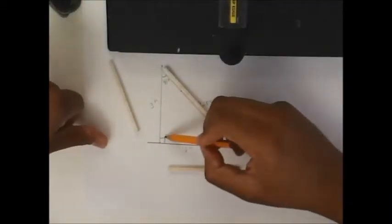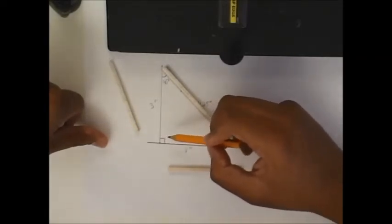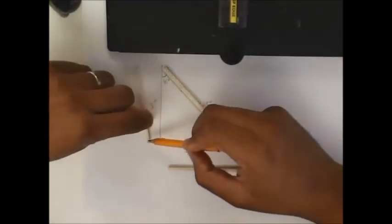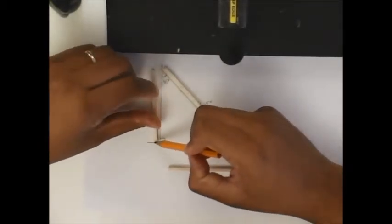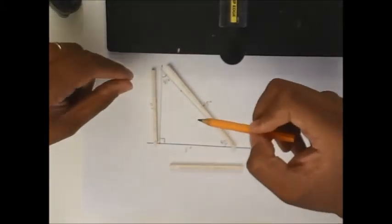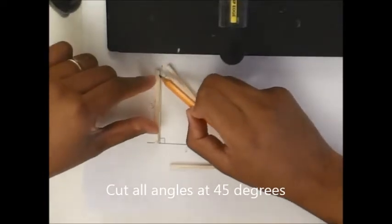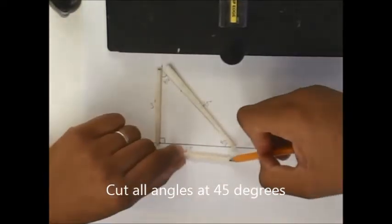This angle right here, this is a 90-degree angle. So what I'm actually going to do is I'm going to cut both of these two pieces here at 45 degrees, because two 45s make 90 degrees. But then, I'm also going to cut these at 45 degrees.